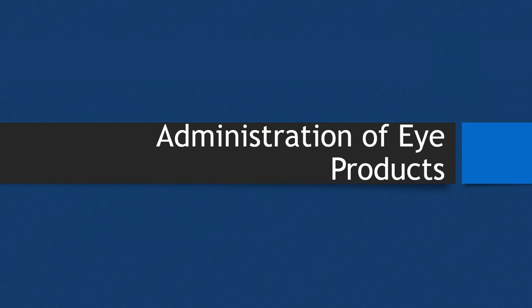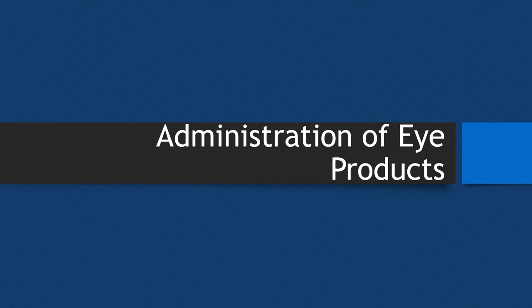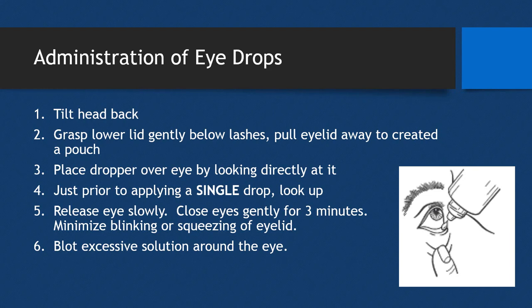We'll briefly review general administration of eye products, which applies to both prescription medications you'll learn about in therapeutics and the OTC medications we'll discuss today. We'll cover administration of eye drops first, then eye ointments. It's a very similar process with key components that are mostly the same, but with a few unique counseling points that differ between drops and ointments.